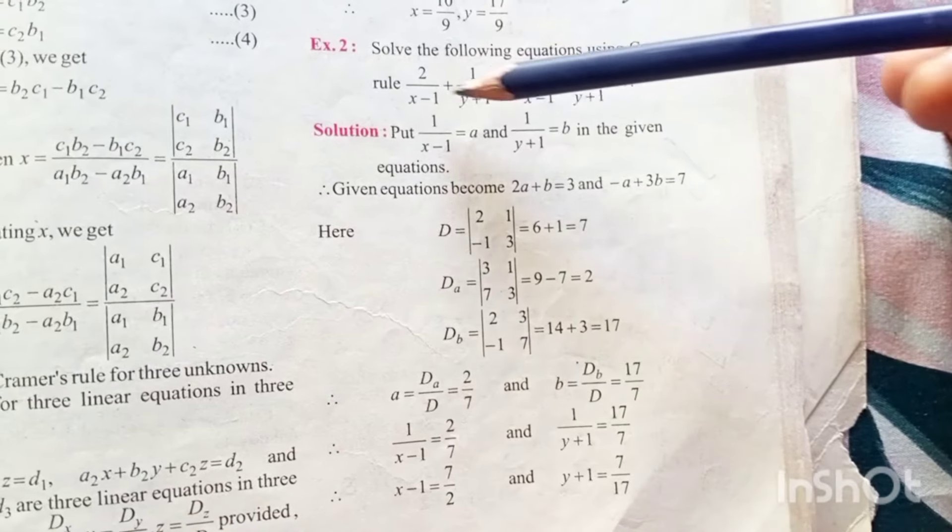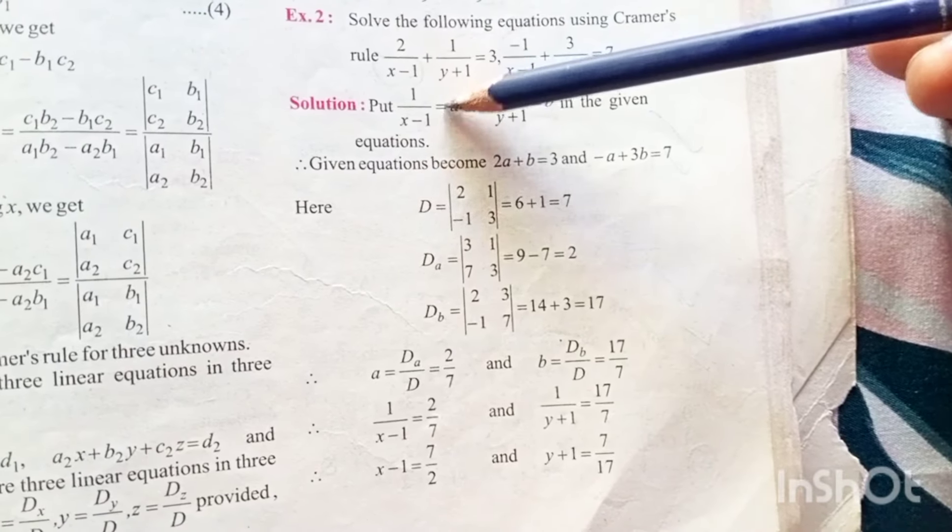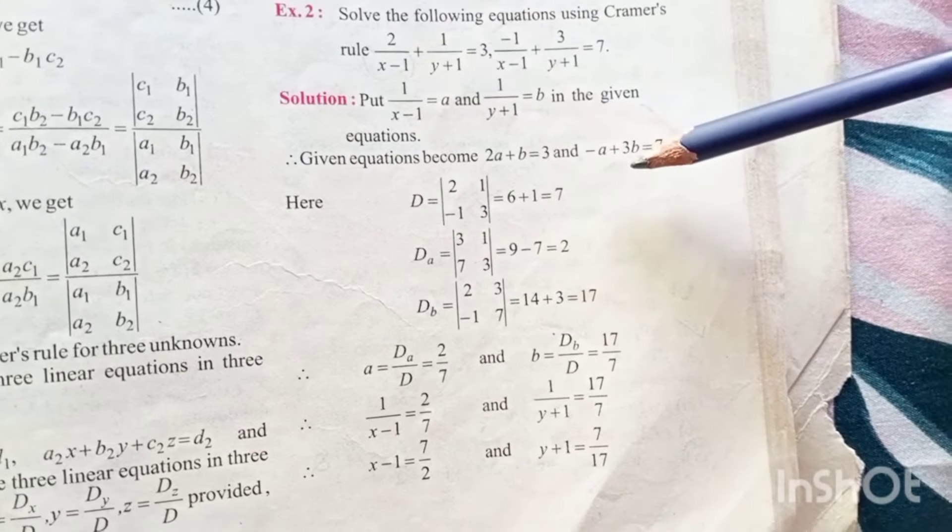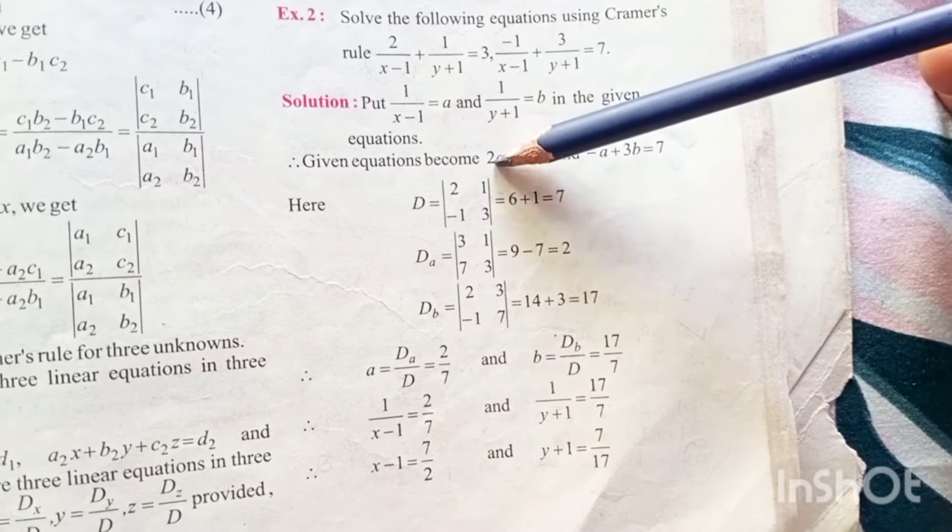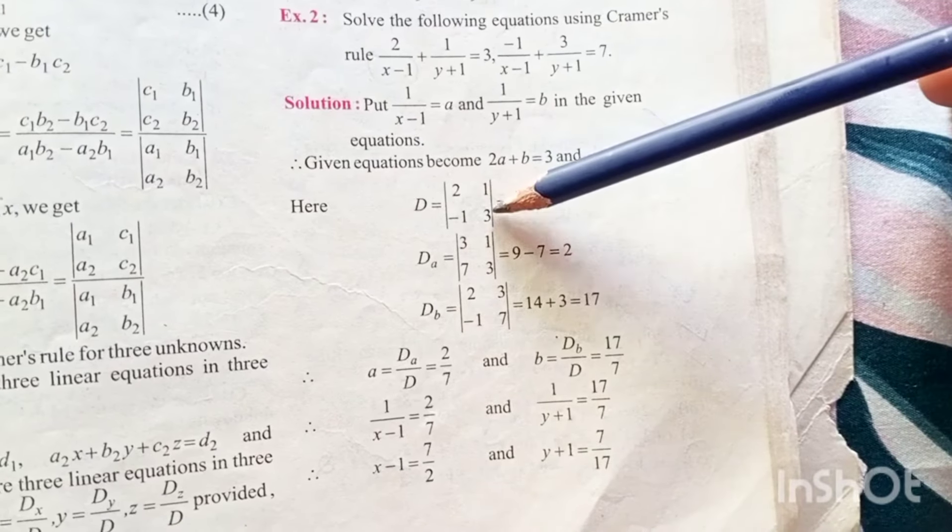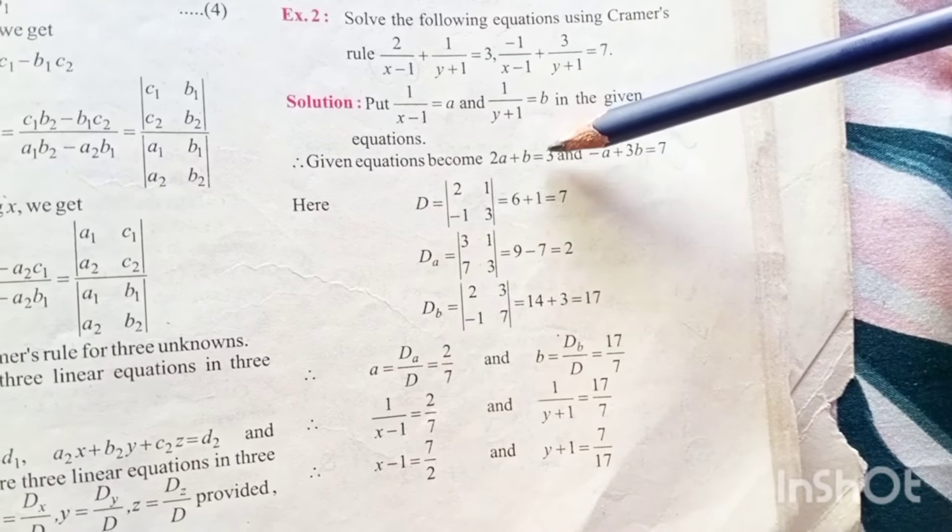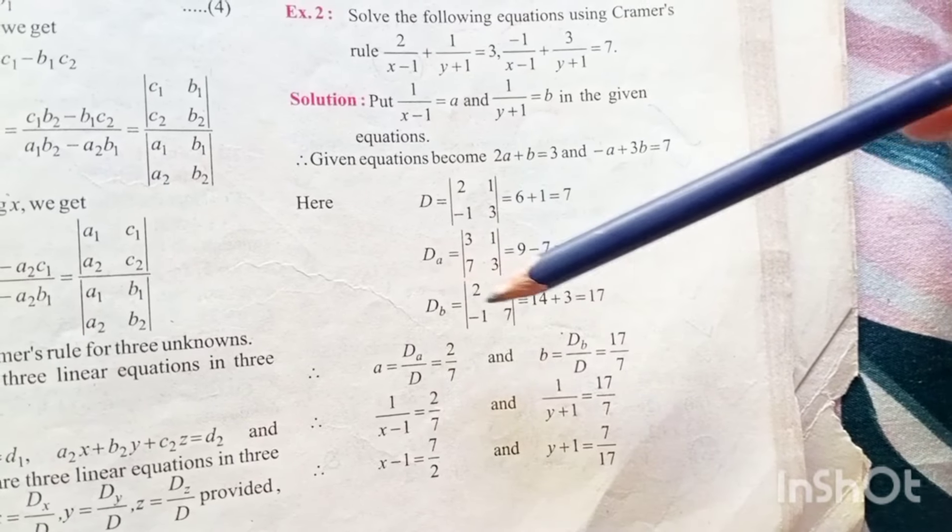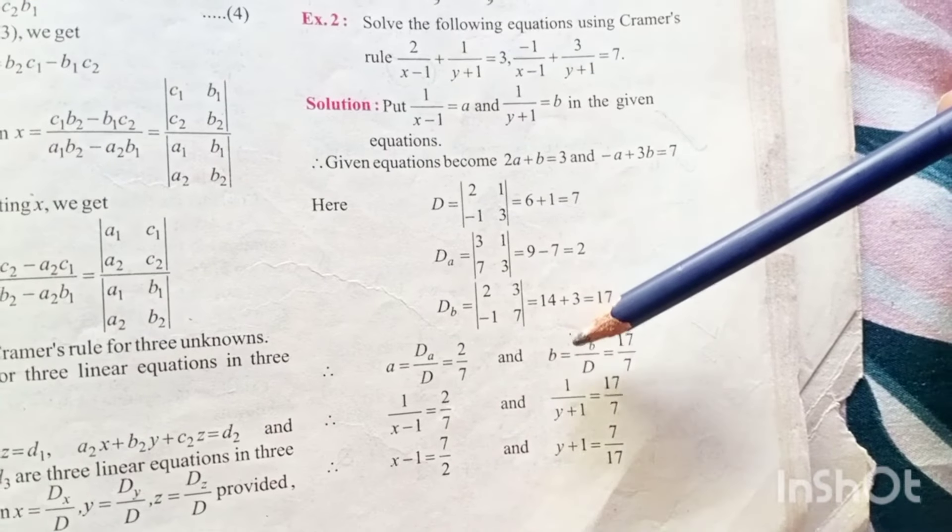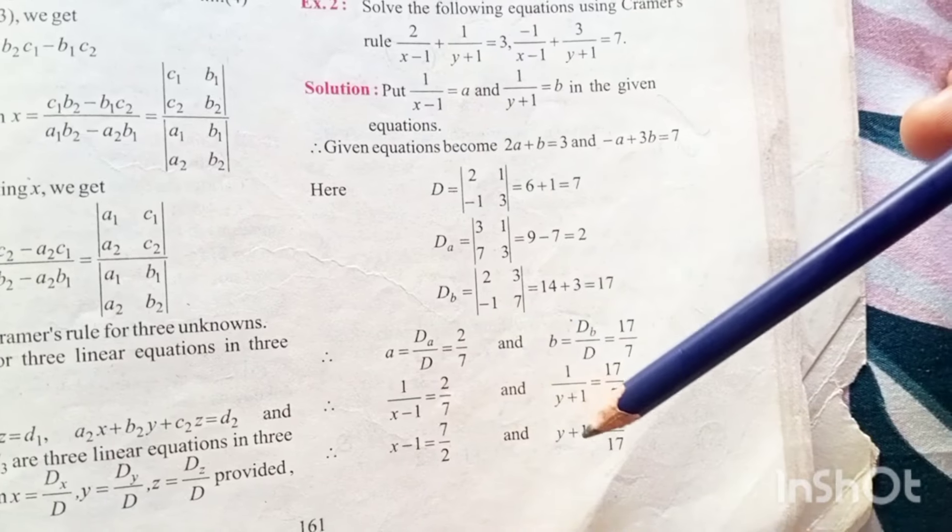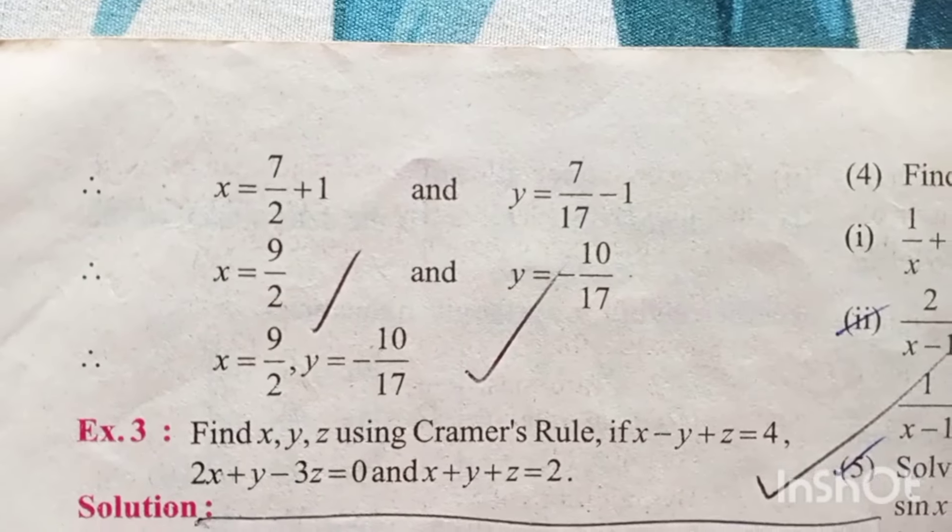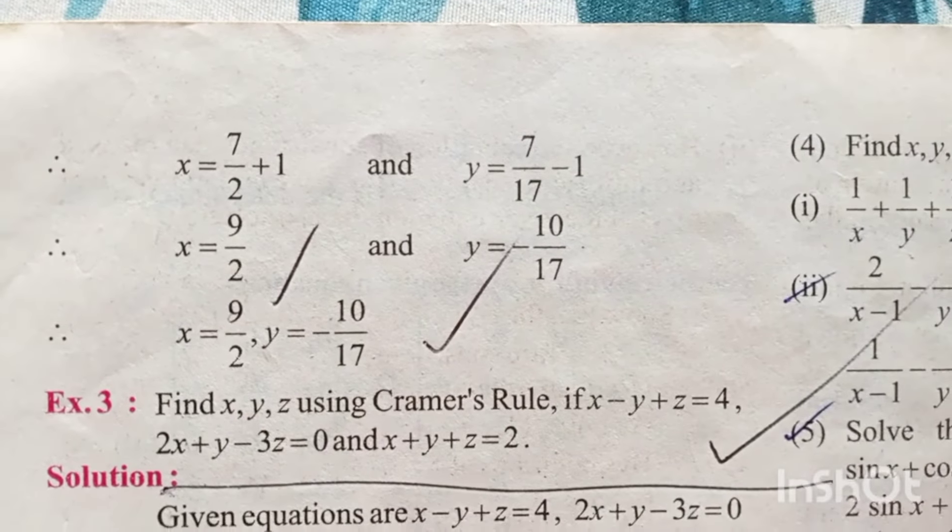Now in this question it is x minus 1, y plus 1. So let us substitute that as some another variable. So 2a plus b is 3 and minus a plus 3b is 7. Now first you will use the same method and find what is a and what is b. After finding a and b you have to substitute 1 upon x minus 1 equal to a and 1 upon y plus 1 equal to b then you have to find the value of x and y because question is to find what is x and y not to find a and b. So you got x and y.